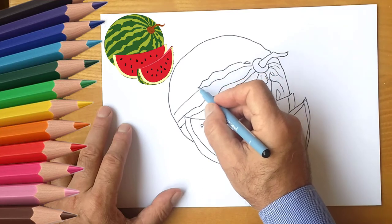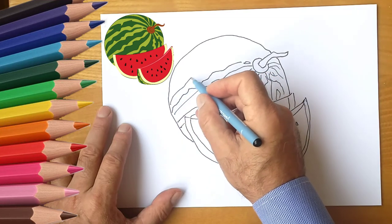Draw many stripes on the watermelon. They go from the center and spread throughout the watermelon.